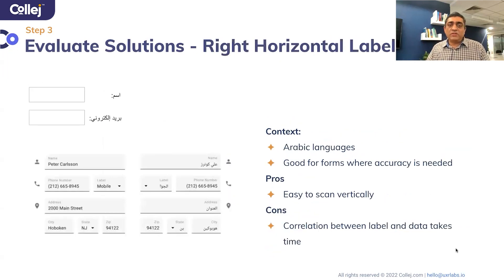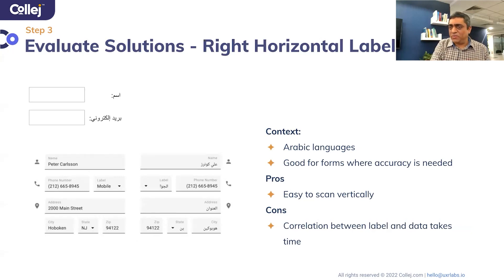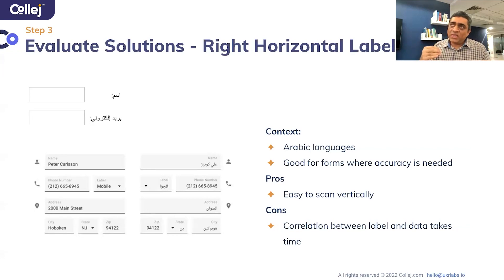Let's look at right horizontal labels. This is really good for Arabic or other right-to-left languages. The same logic applies: the more distance you have between the box and the label, the more time it takes for people to correlate them, which slows down the input process. So that is the trade-off for Arabic interfaces specifically.